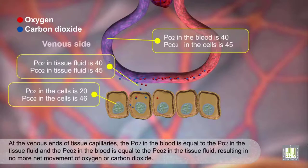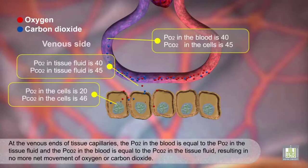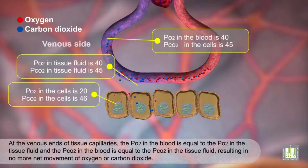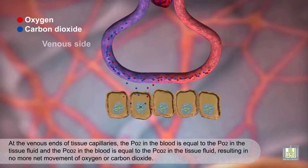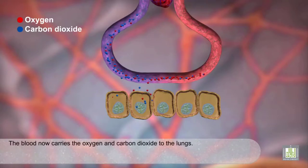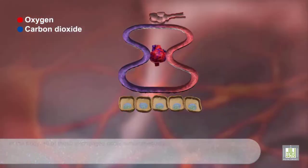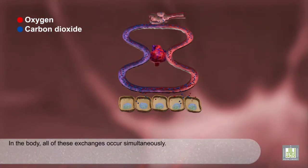At the venous ends of tissue capillaries, the PO2 in the blood is equal to the PO2 in the tissue fluid, and the PCO2 in the blood is equal to the PCO2 in the tissue fluid, resulting in no more net movement of oxygen or carbon dioxide. The blood now carries the oxygen and carbon dioxide to the lungs. In the body, all of these exchanges occur simultaneously.